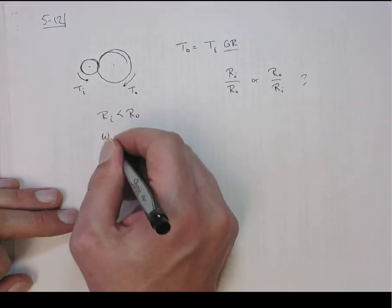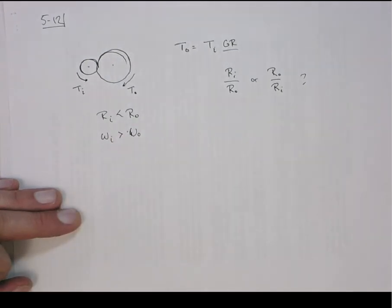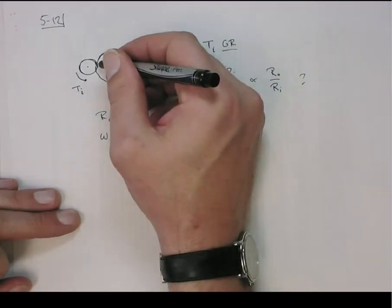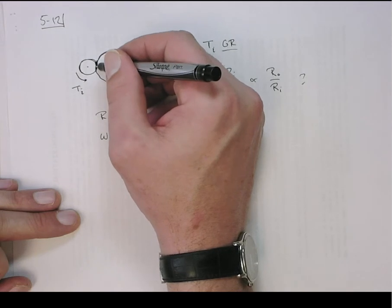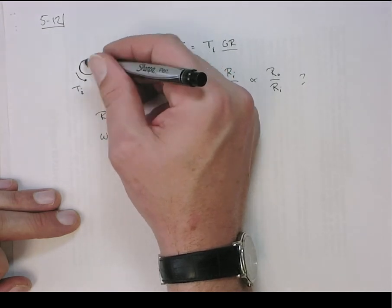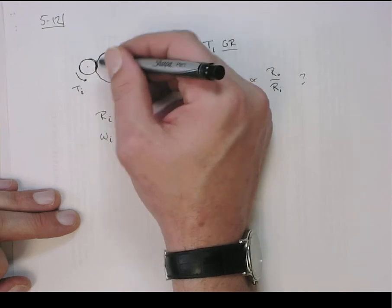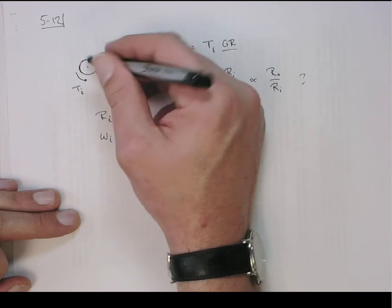Why? Because the line velocity is the same for both at this point. So in one turn, the bigger gear has to have more line velocity. So if you turn this once, this will have to turn more than once.